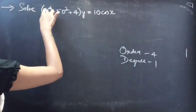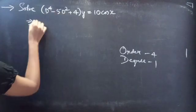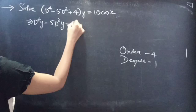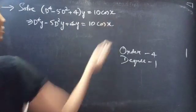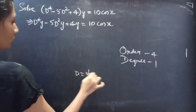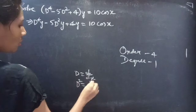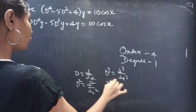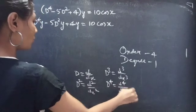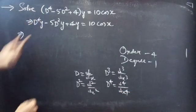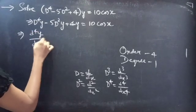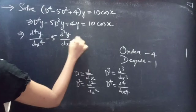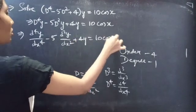We can write the given differential equation as D⁴y − 5D²y + 4y = 10 cos x. We know that D is a differential operator. Then D² will be d²/dx², D³ is d³/dx³, and D⁴ is d⁴/dx⁴. So we can write D⁴y/dx⁴ − 5·(d²y/dx²) + 4y = 10 cos x.